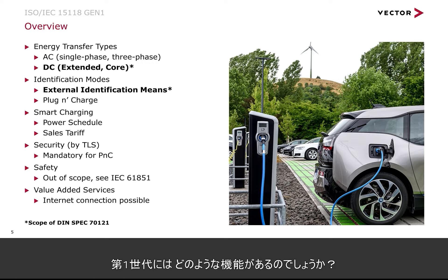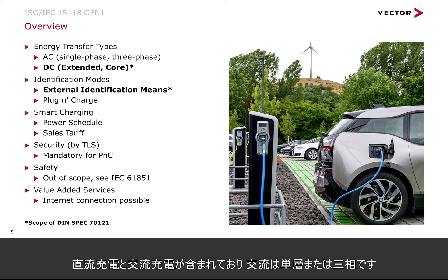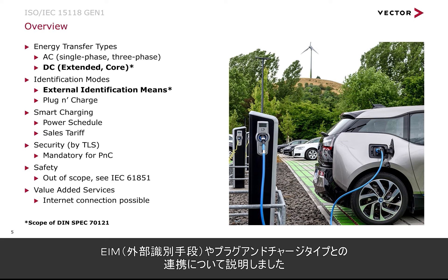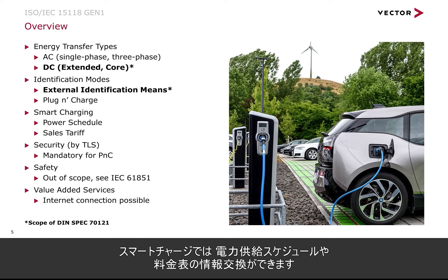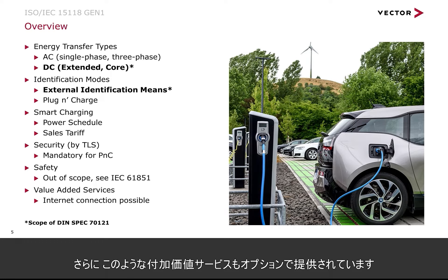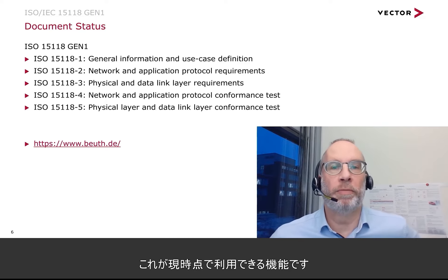Looking at generation one, what's included is the AC charging and the DC charging — AC single phase or even three phase. We have different identification means, including EIM and plug-and-charge types. We have the smart charging part with the power schedule and sales tariffs. And obviously we have the security aspect represented by TLS. Furthermore, we have the option for value added services. This is what's available today.